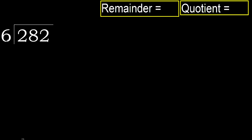282 divided by 6. 2 is less than 6, therefore move to the next digit. 28 is not less than 6, therefore we work with 28. 6 multiplied by which number is nearest to 28 but not greater?